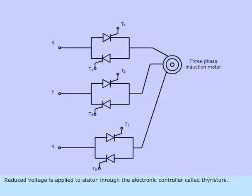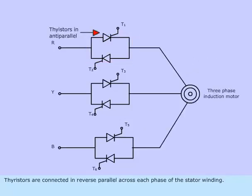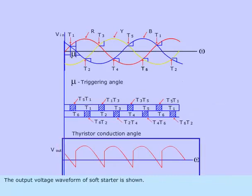Reduced voltage is applied to stator through the electronic controller called thyristors. Thyristors are connected in reverse parallel across each phase of the stator winding. The output voltage waveform of soft starter is shown.